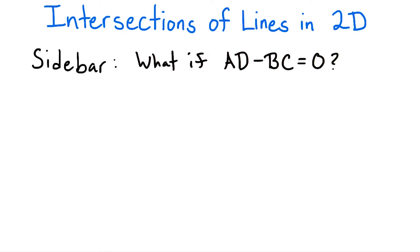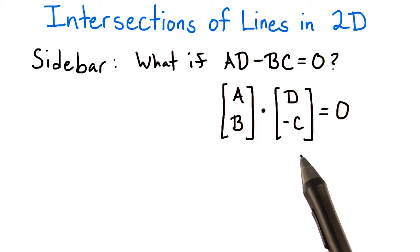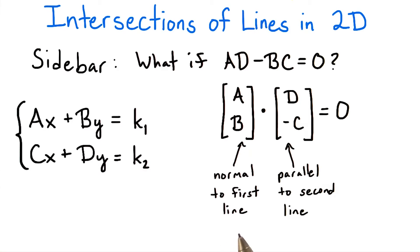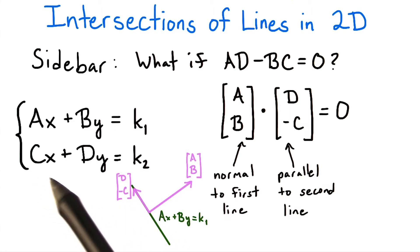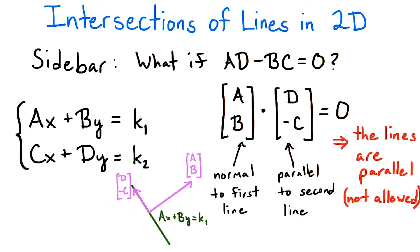Or can we? What if ad minus bc equals 0? Well, if this is the case, then let's rewrite the left-hand side as a dot product using the trick we used before. This gives us the vector [a,b] dotted with the vector [d,-c] equals 0. Now, this first vector is a normal vector to the first line. And the second vector, [d,-c], is parallel to the second line. Looking at this geometrically, this means that the line ax plus by equals k1 is parallel to the line in the direction of [d,-c], which is cx plus dy equals k2. But this violates our initial assumption that the lines were not parallel.